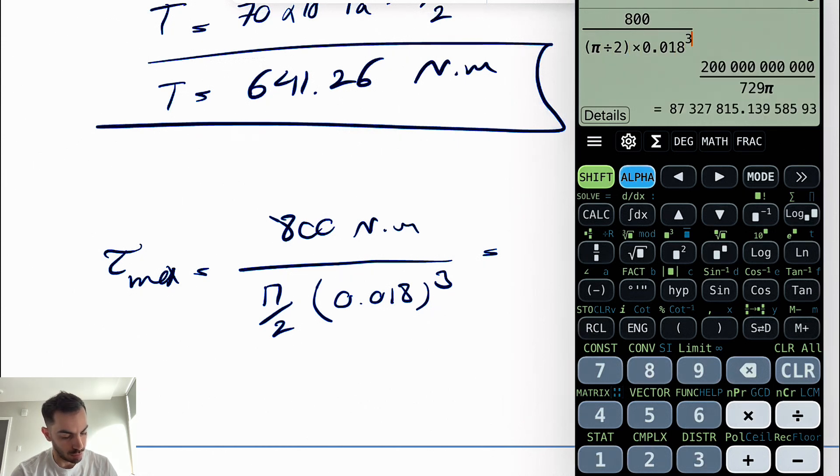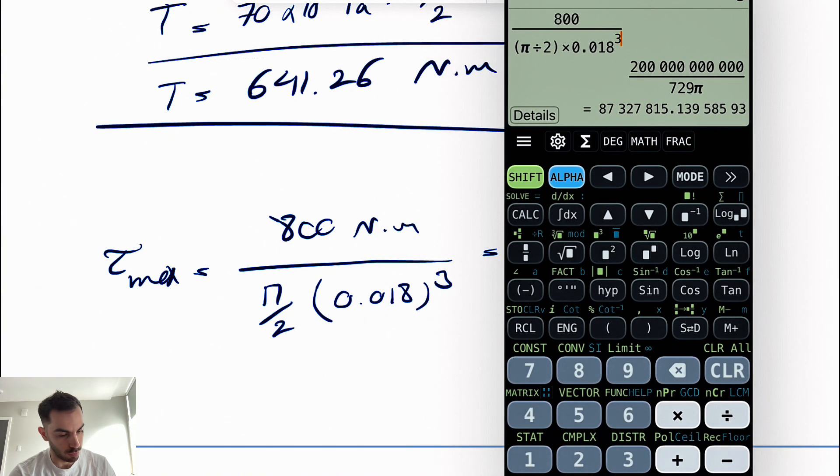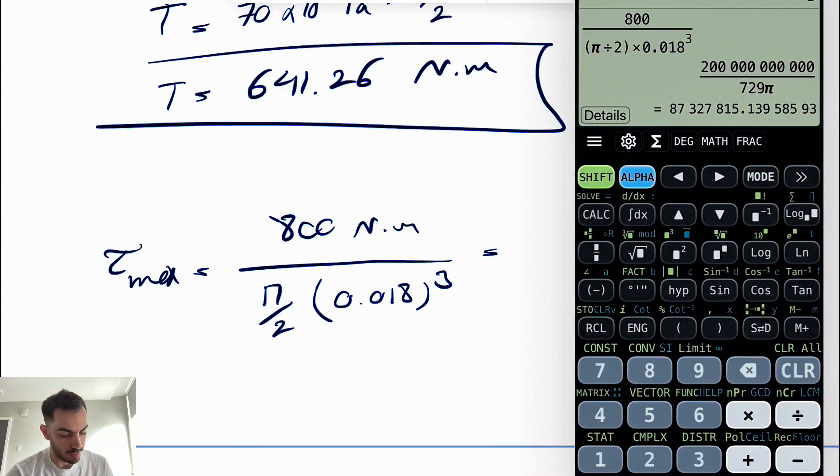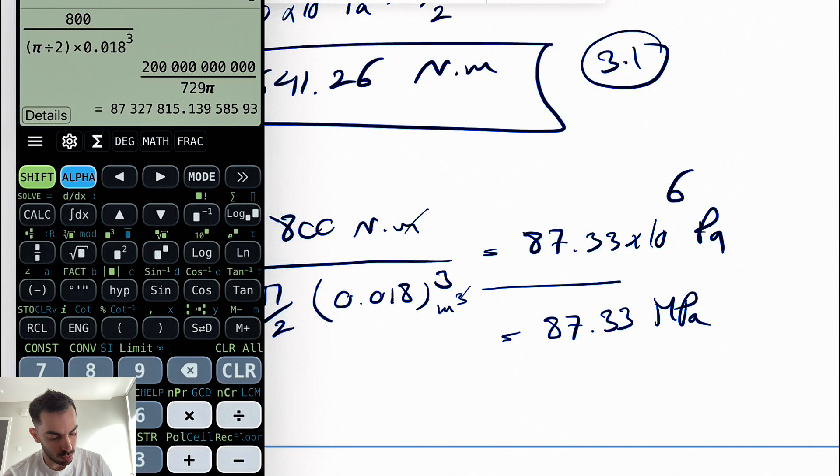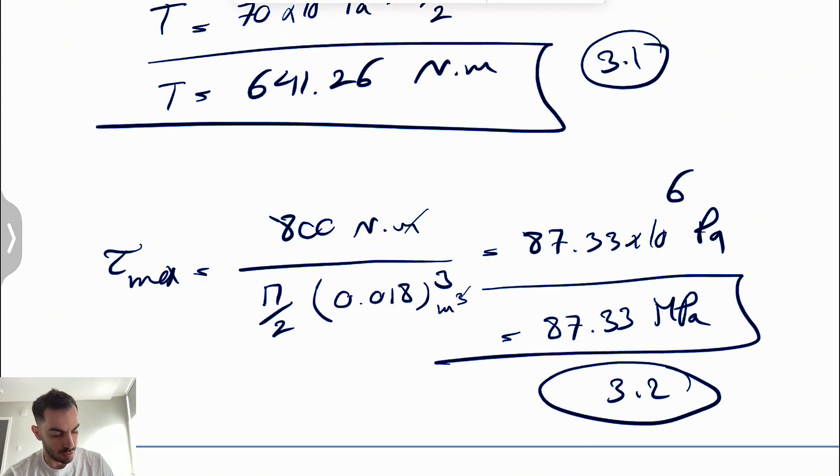Let's calculate: 800 divided by π/2 × (0.018)³. This gives us the answer in pascals because the meter cubed cancels, leaving newton per meter squared which is pascal. Dividing by one million gives 87.33 × 10⁶ pascals or 87.33 megapascals. That's the answer for the second question.